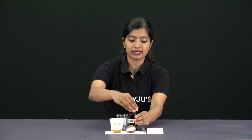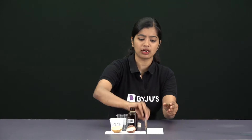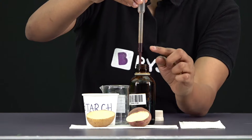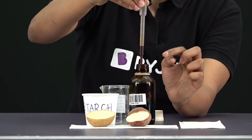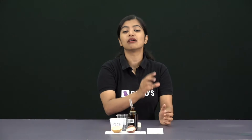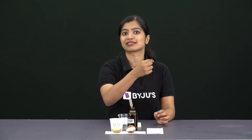Now let's understand the science first before I go ahead. Iodine is normally a brownish color liquid. If you look at the tube here, you can see that it's a brownish color liquid. But when it reacts with starch, we see that it turns blue-black. So this presence of blue-black will help us understand that starch is present in this particular sample.